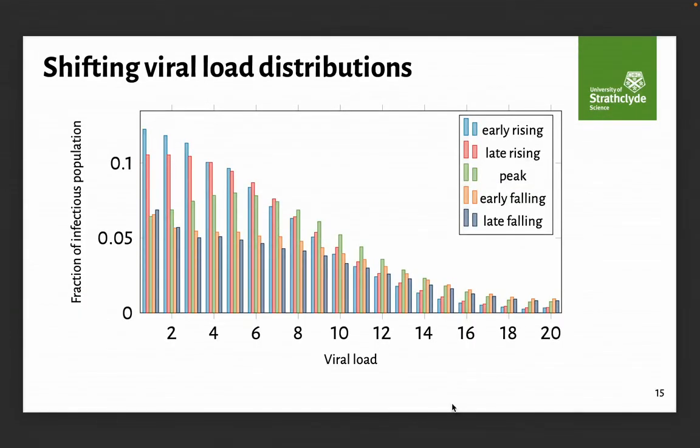And not only that, the previous one was everybody starting a population of a thousand individuals, all starting at the same time with the same viral load of one and seeing what happens. Now, if we run an epidemic and we run the coupled version with transmission, we can see how the viral load distribution in the population changes according to the state of the epidemic, whether it's early in the epidemic and it's rising, when people are being infected faster and faster, so we get more individuals with less viral load, whether it's later as the epidemic is rising, it's about halfway up at the peak, and as it's falling. And as it's falling, we have more and more people who are later in the course of their infection.